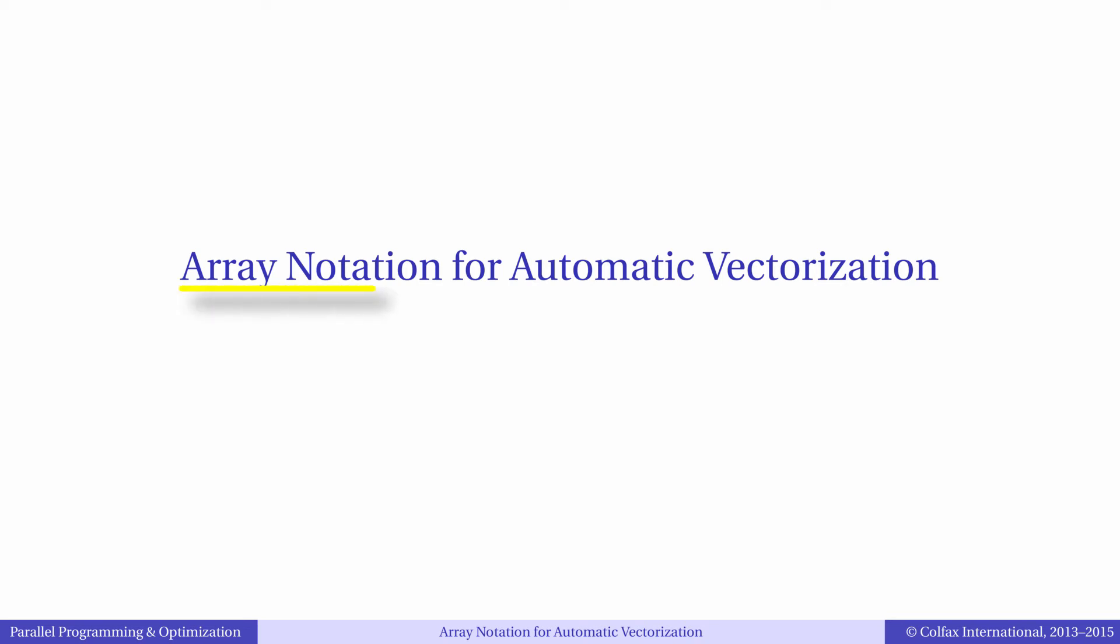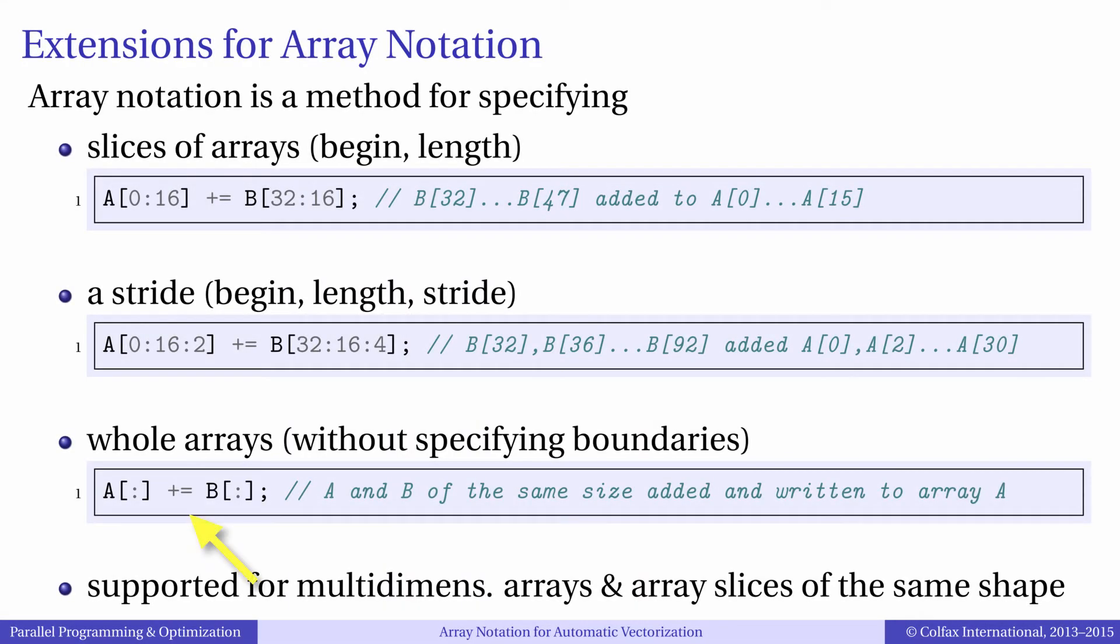Array notation is a C and C++ language extension in the Intel compilers. It allows to apply an operator or a function to entire array or slices of arrays. The compiler will vectorize expressions with array notation wherever it is possible.